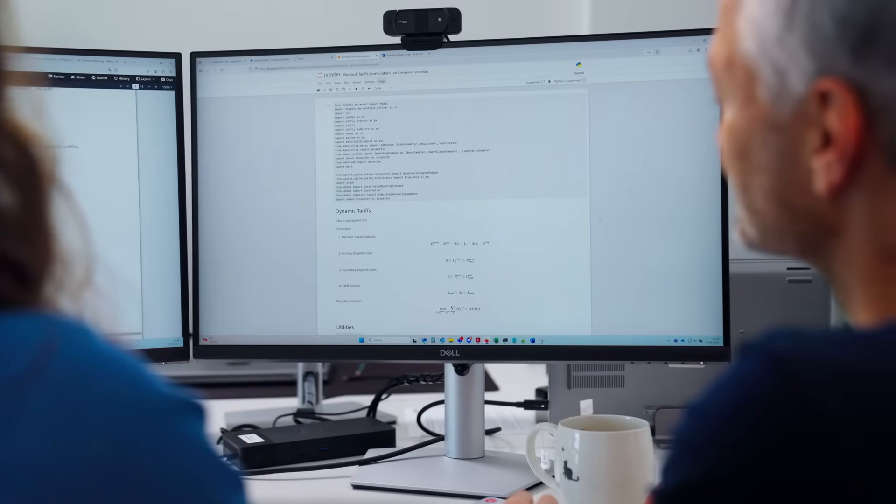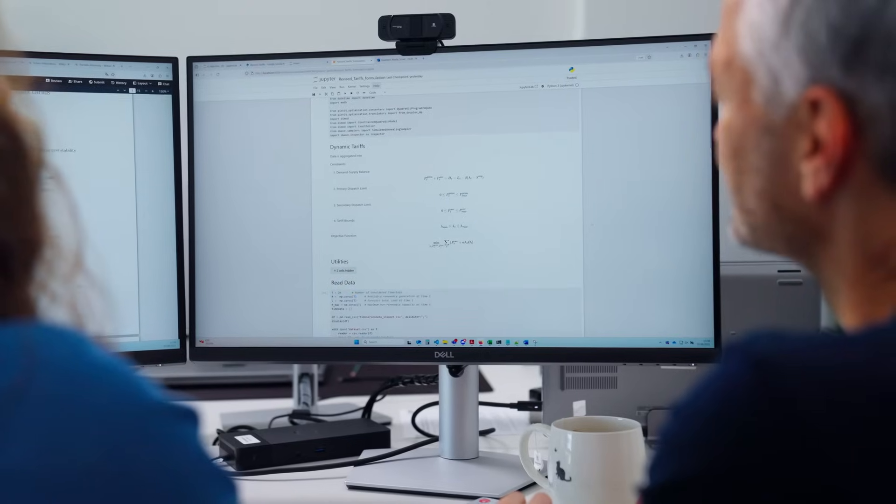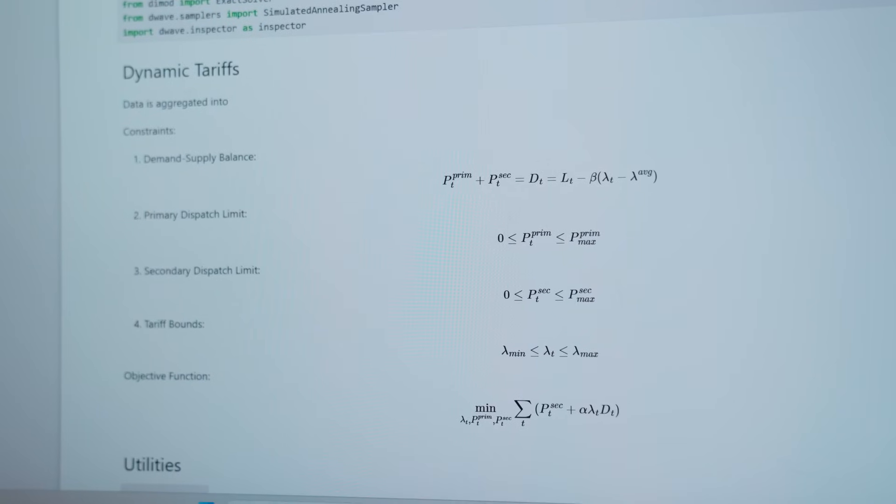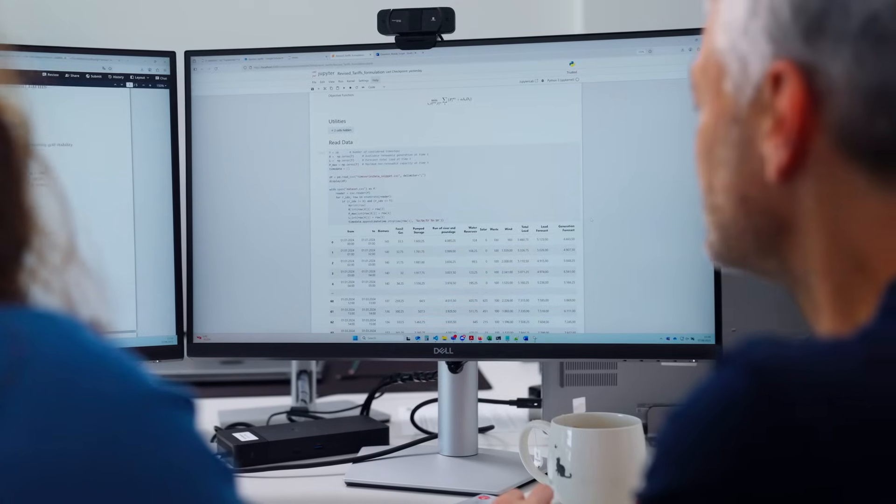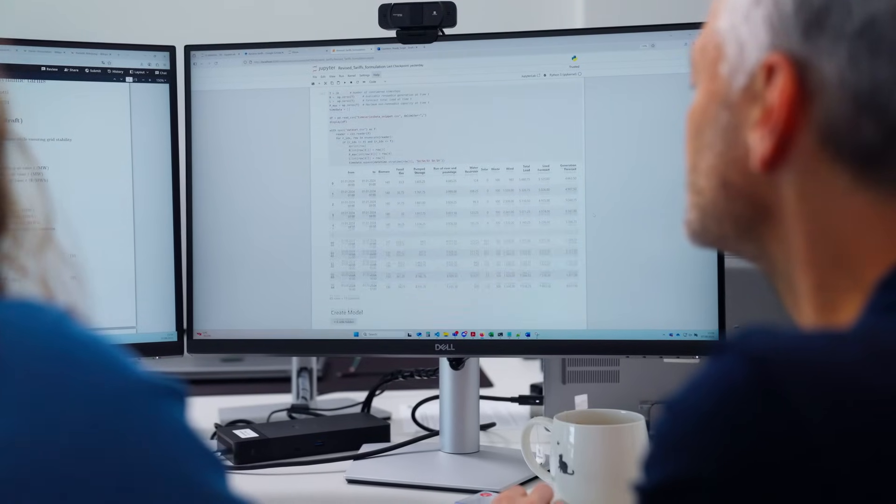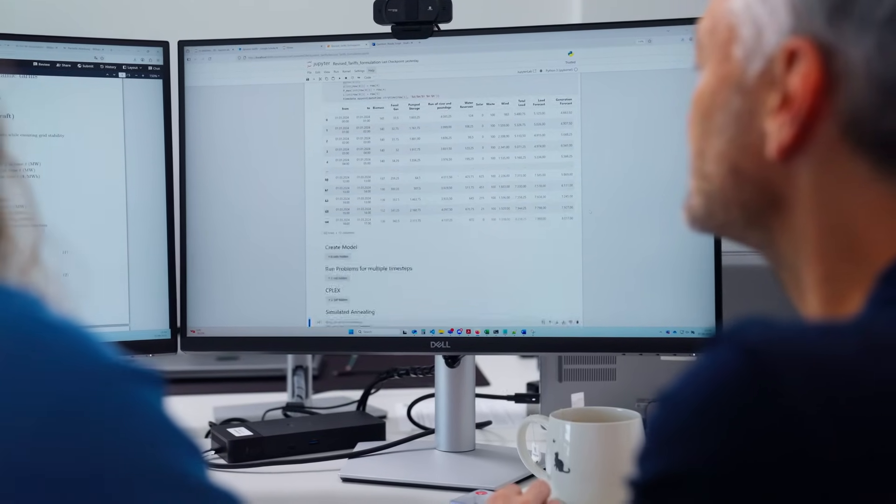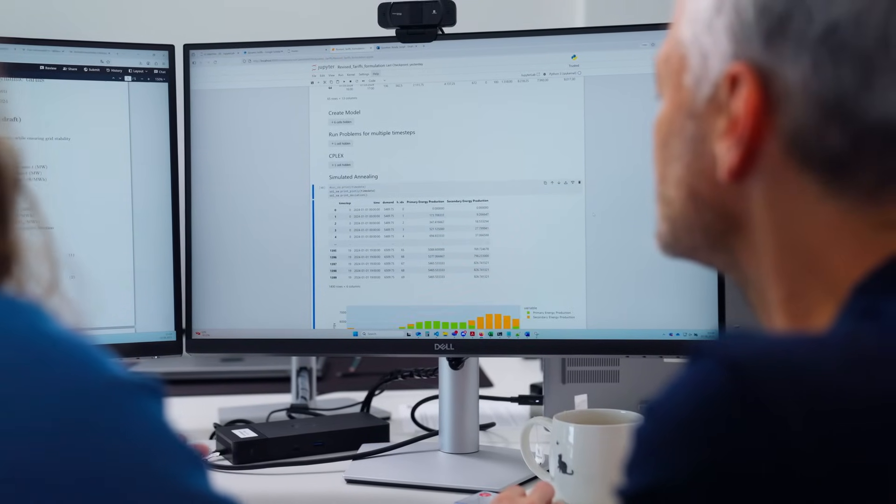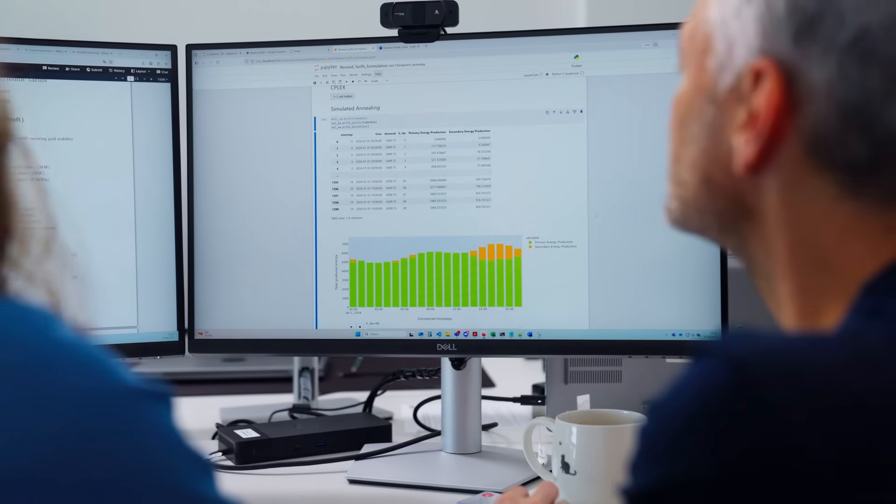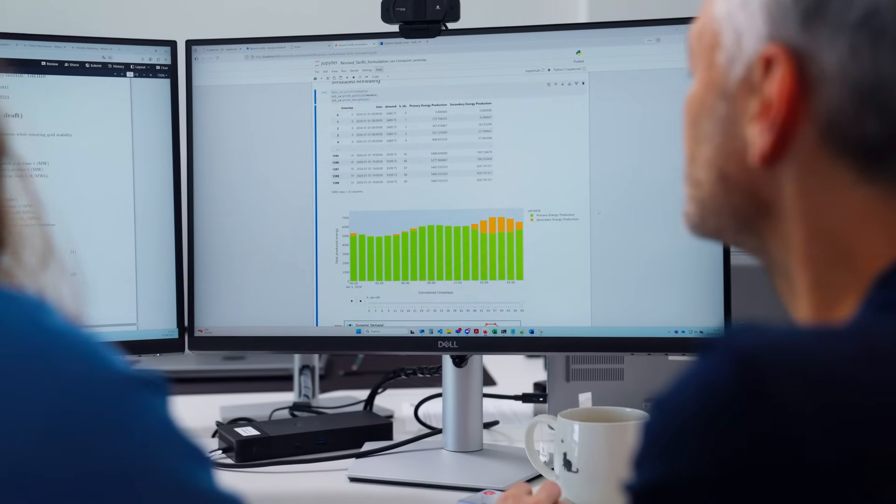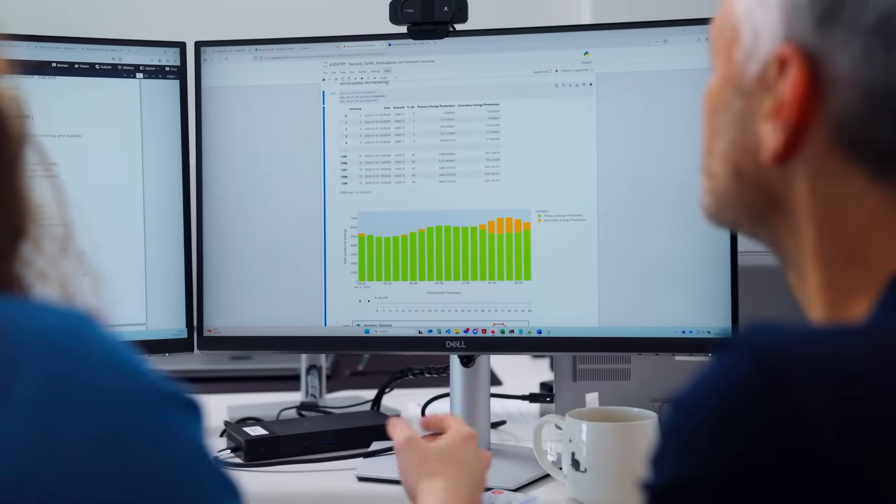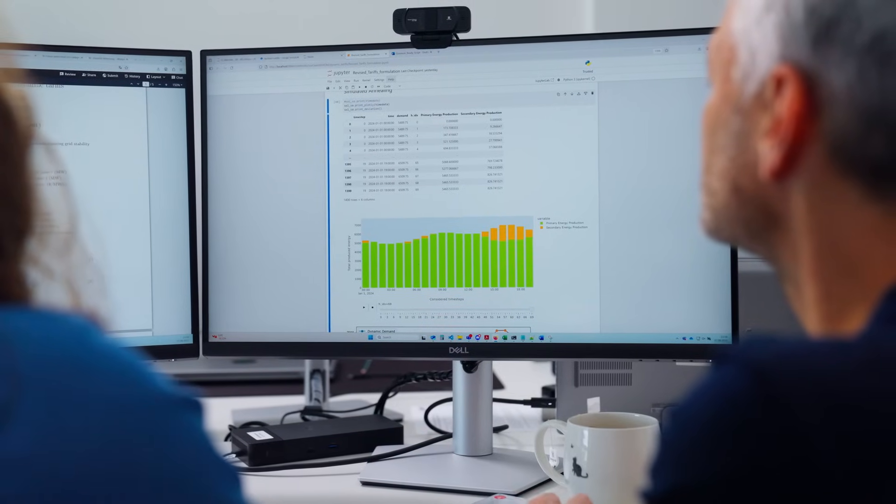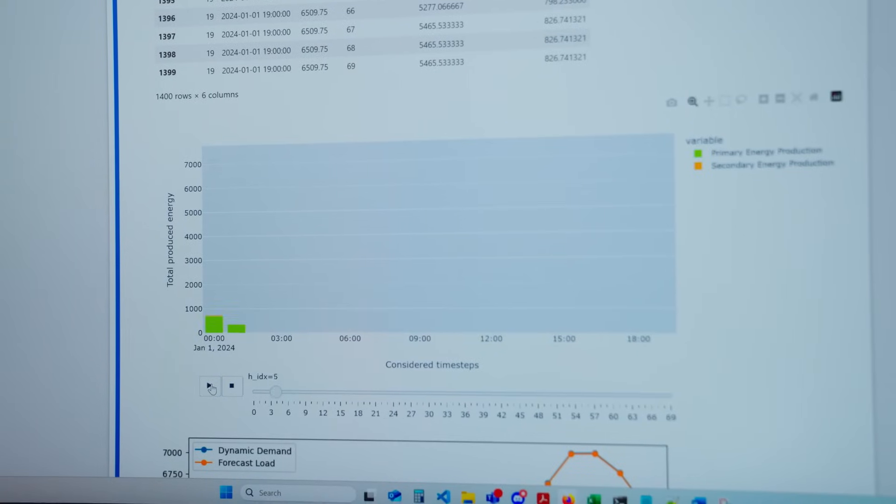And we can actually look at the results that we have right now. So here we can have a quick look at the mathematical constraints that we have in the model. And here is the data that is provided to us by Hercom time series. Now using our new formulation of the dynamic tariffs problem, we can actually see the results that we obtain here as a tabular form, as well as the schedule of the dynamic tariffs formulation over multiple time steps, which we can actually execute on the hardware.